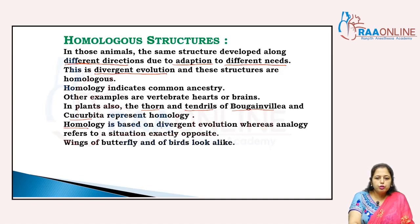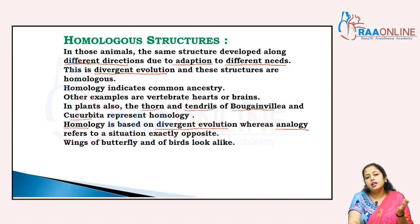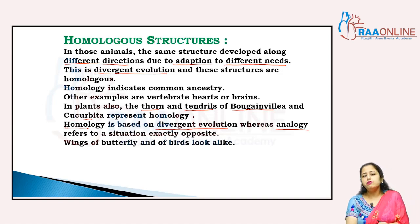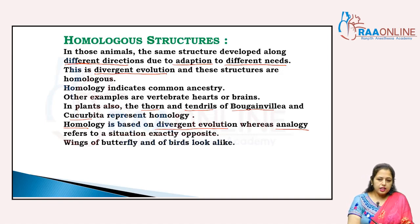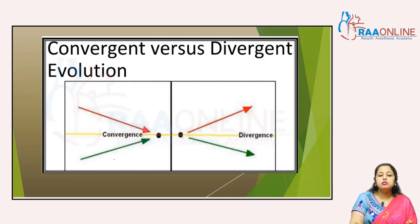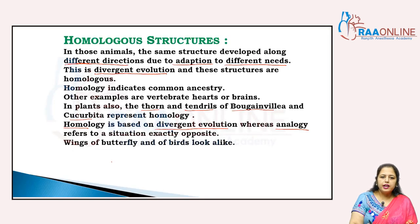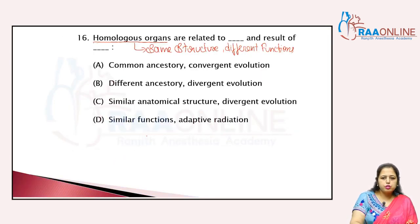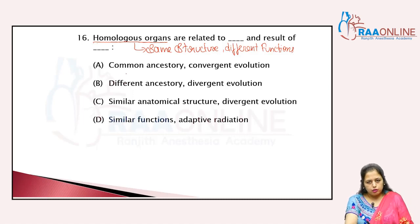Homology is based on divergent evolution, whereas analogy refers to the exact opposite situation — it represents convergent evolution. That means same function but different structure. That is called convergent evolution — the structures come from different directions.